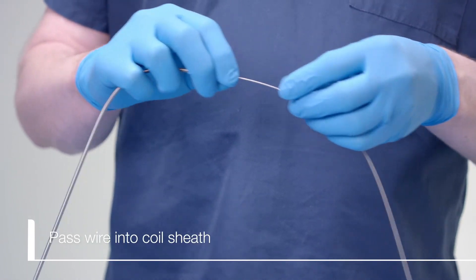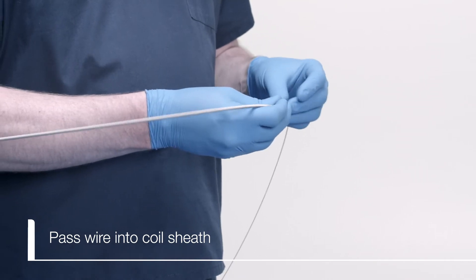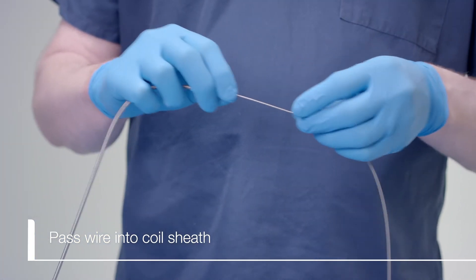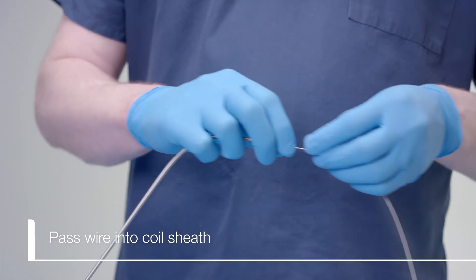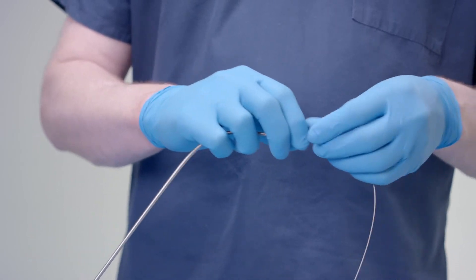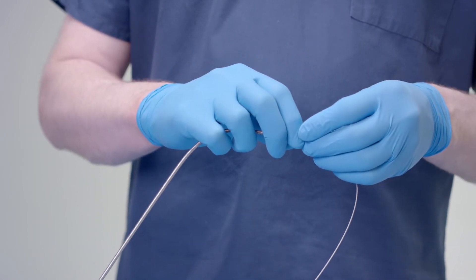The stem and basket wire are now loaded into the coil sheath. The wire is advanced through the unmarked distal end of the sheath. The end with the green band is the proximal end and is connected to the handle later on.